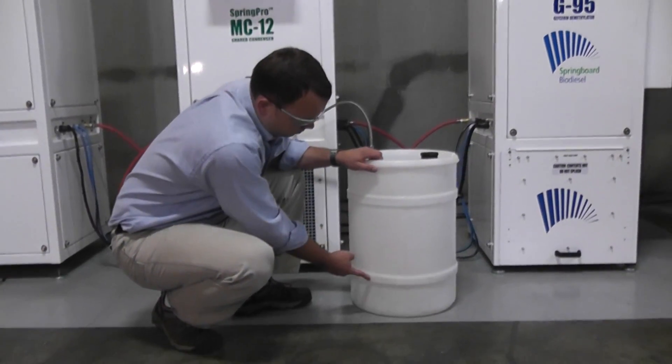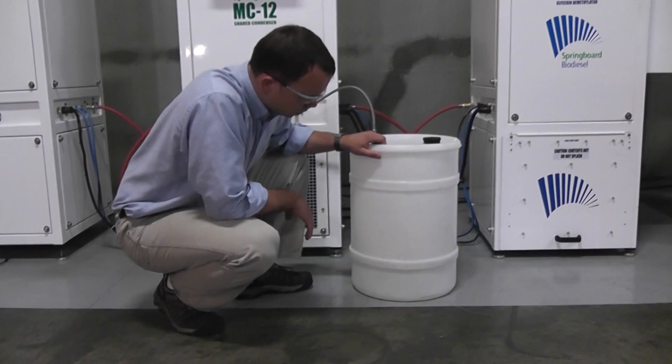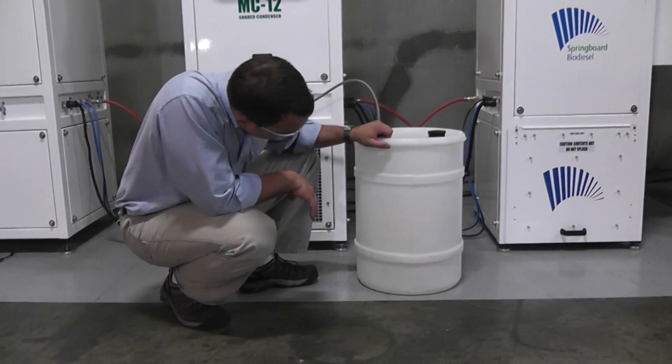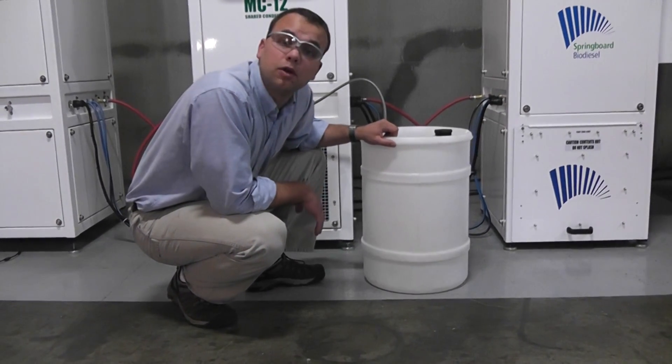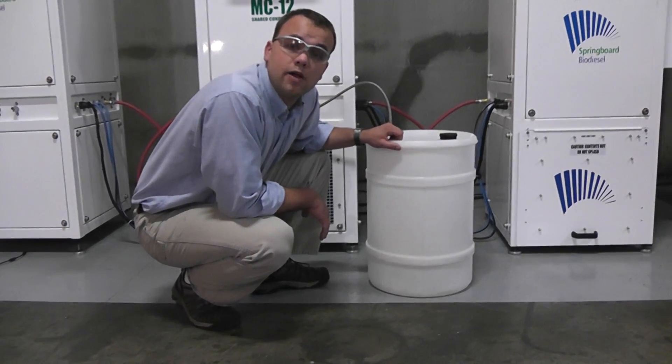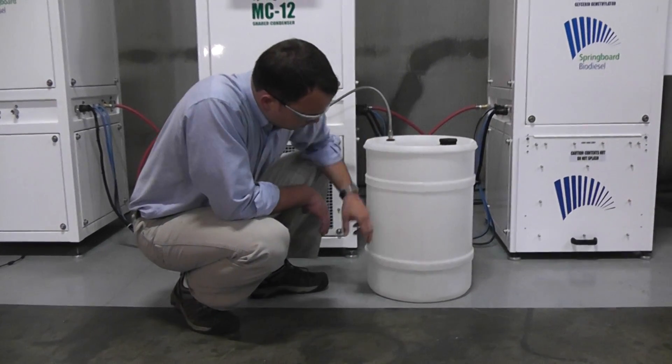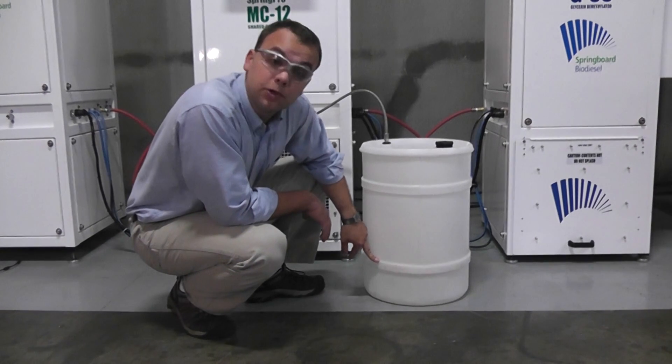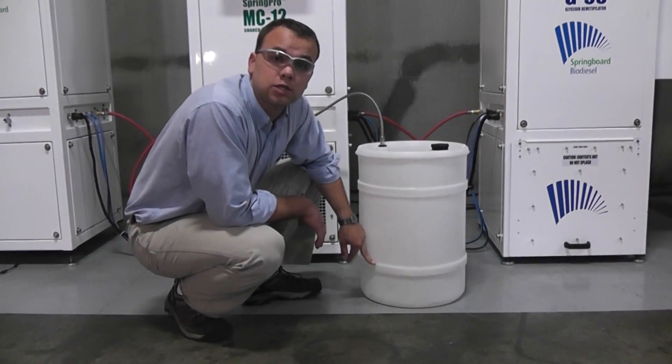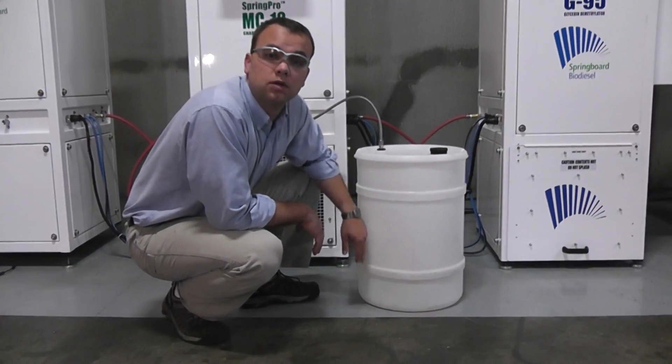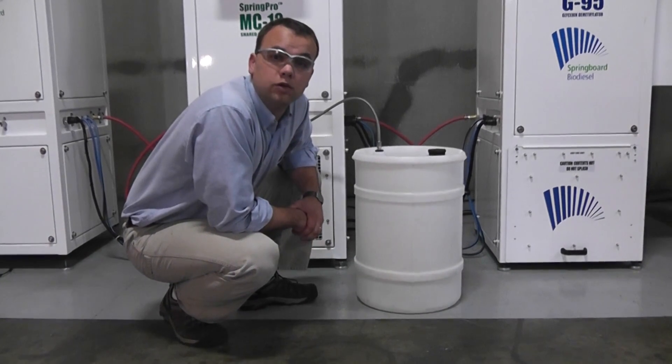And so by the way, just checking our methanol reservoir here, looks like we got between 4 and 5 gallons of methanol out of that 20 to 21 gallons of glycerin. And of course this methanol is not of sufficient purity to be reused in biodiesel processing immediately. We need a little bit of further refinement before you can reuse it to make biodiesel.